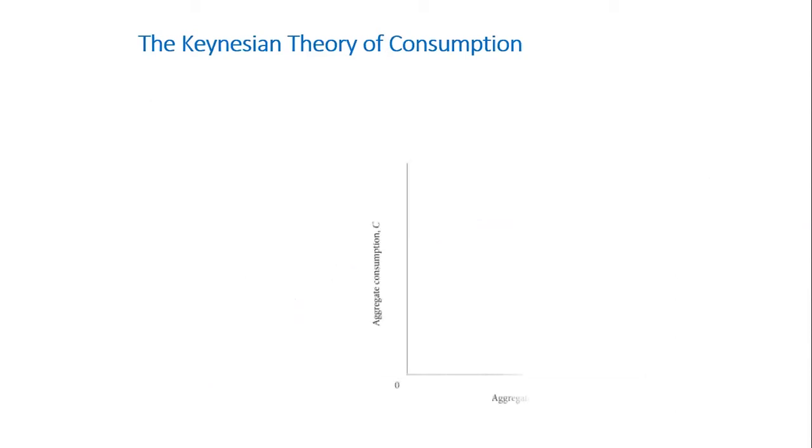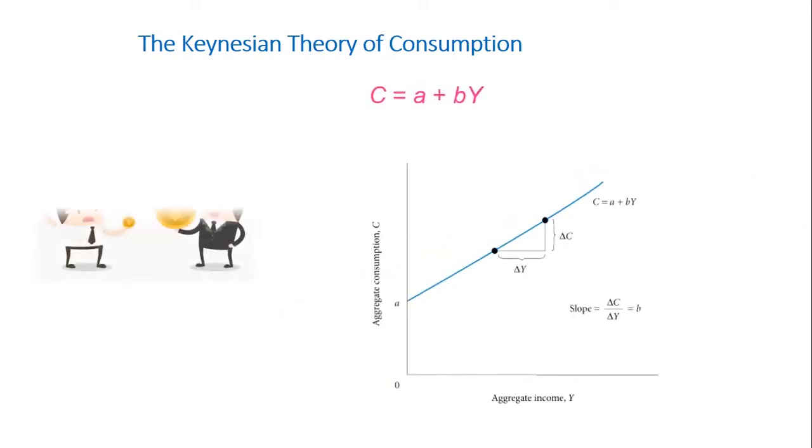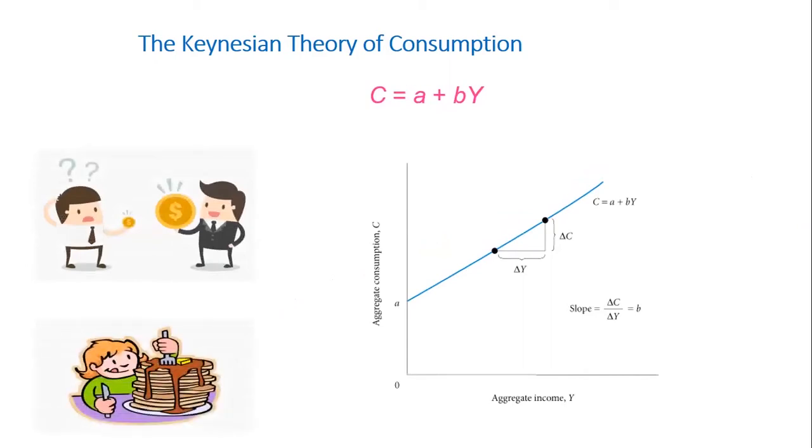Now with a straight line curve, we can use the following equation to describe this curve. C, which is the consumption, equals a plus by, where a is the y-intercept, or the intersection between the consumption line and the y-axis, and b is the slope.